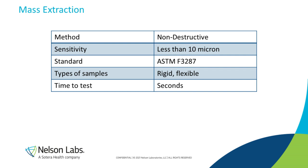Now we're transitioning to option two deterministic methods — the vacuum-based methods. We'll start with mass extraction, which is Nelson's personal favorite. Nelson selected mass extraction in part because of the great folks at Advanced Test Concepts, or ATC, who pioneered the technology. Their technology appealed for its versatility with different product types, and the calibrated leak orifice was a huge selling point. ATC, which is now Pfeiffer Vacuum, has always been responsive and helpful.